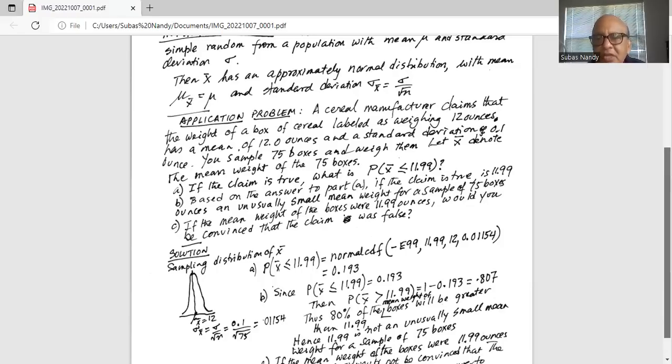The lower boundary for the normal distribution in this case is minus E99. So, we'll press the minus sign on the left of the enter button and then we will do second comma, second button and then comma.